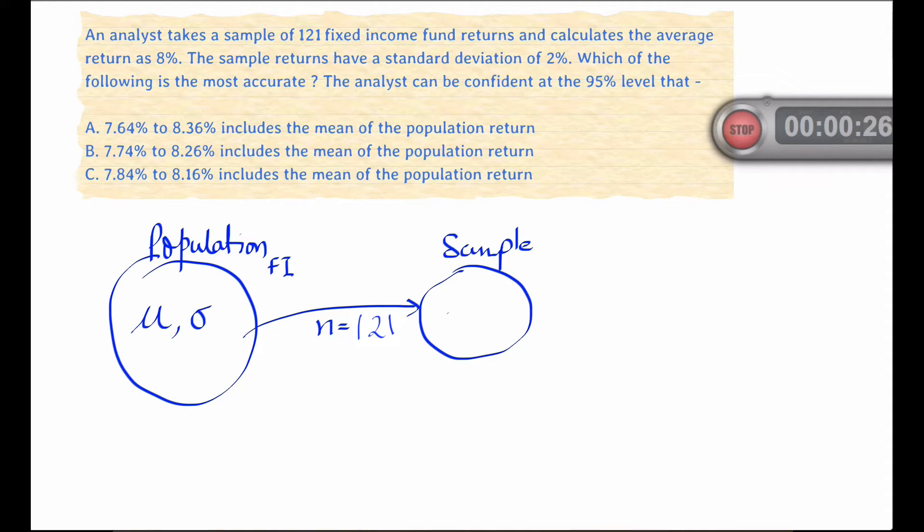Now applying the central limit theorem, we understand that the distribution of this sample mean is a normal distribution characterized with a mean value of 8% and a standard deviation which is the standard error of the sample mean.